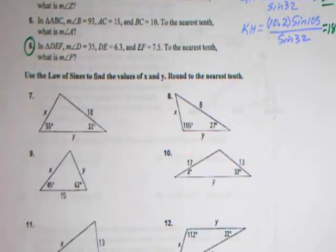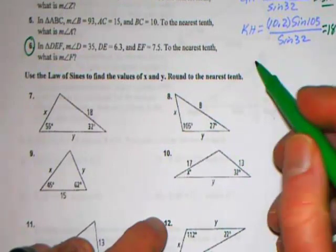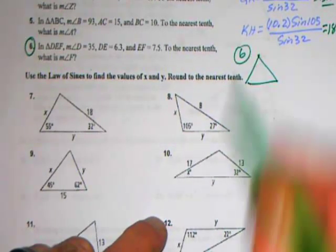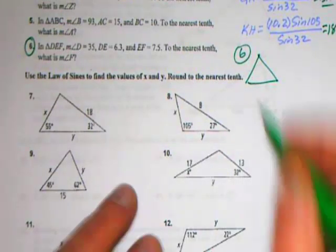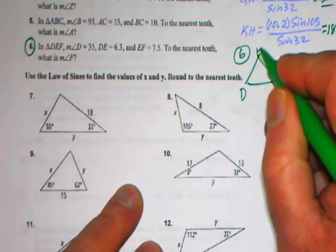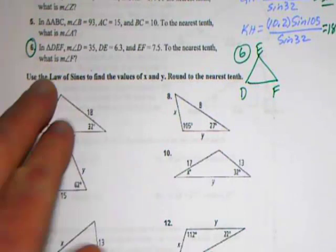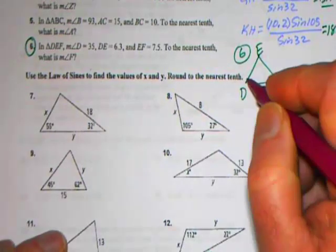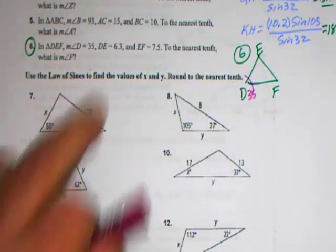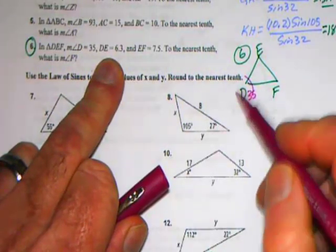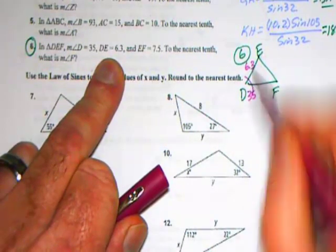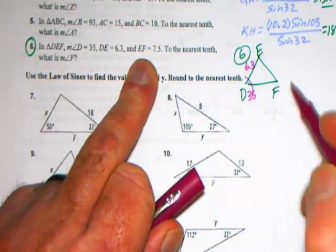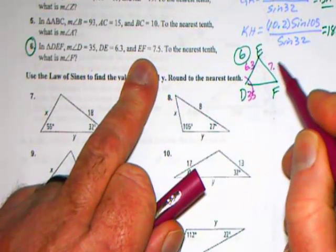Same idea for number 6. What we want to do is sketch the triangle to represent it. So now we're doing number 6. We've got triangle DEF. Angle D has a measure of 35. DE is 6.3 and EF is 7.5.